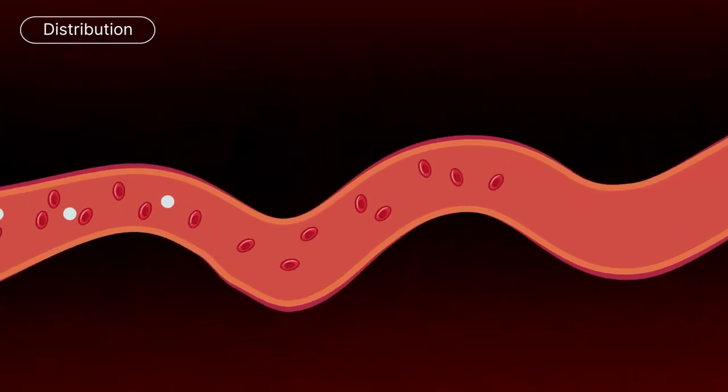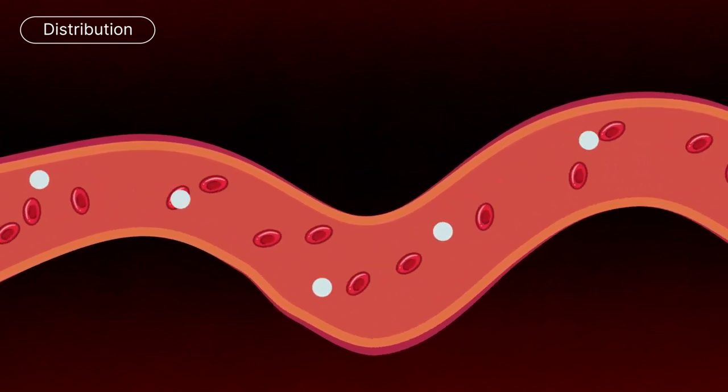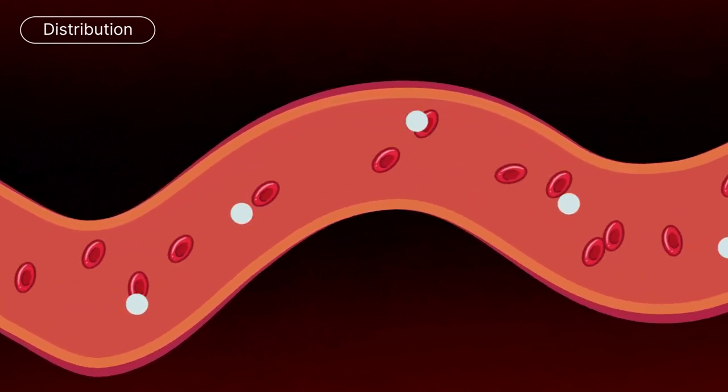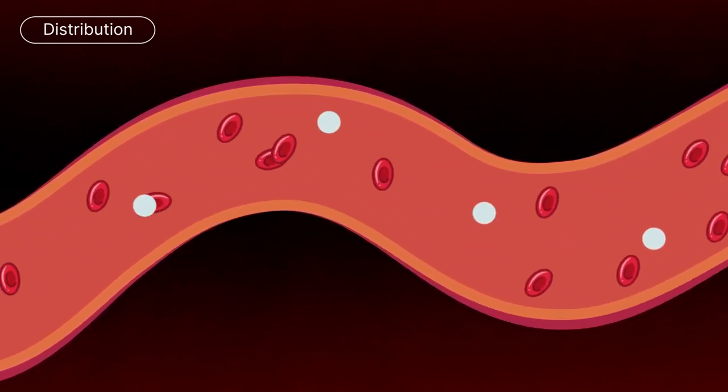Distribution. Once in the bloodstream, the drug is distributed to the organs and tissues. How quickly and extensively a drug spreads depends on blood flow, the drug's ability to cross membranes and its binding to plasma proteins.